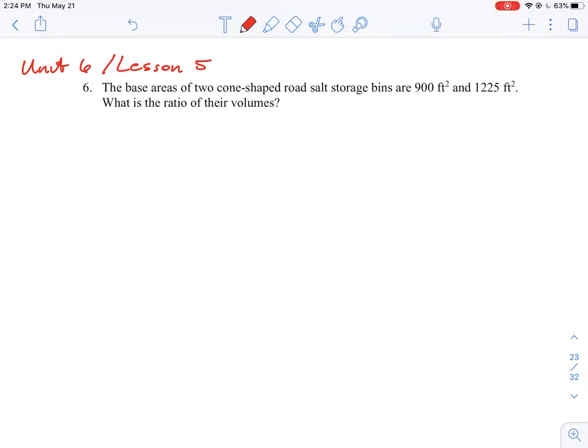Let's take a look at how we could do this question number six, where we're asked to find the ratio of volumes of two objects, but we're not really told what the objects are in terms of their actual dimensions.